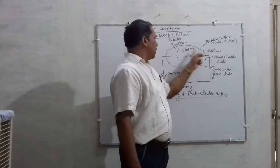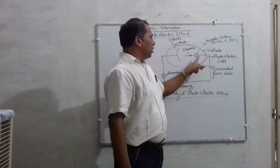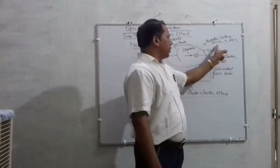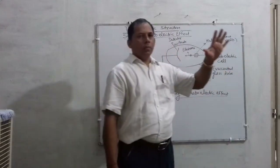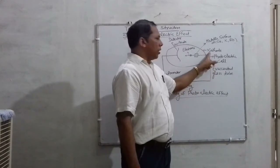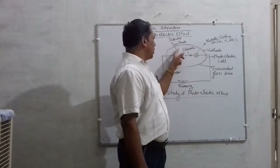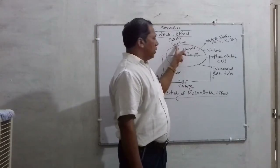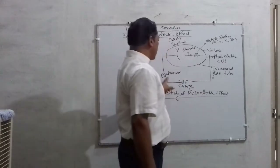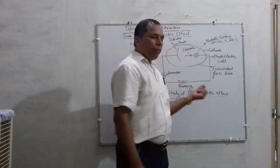One terminal is a cathode and the other is an anode. Generally, metallic surface metals like cesium, potassium, or rubidium are used as a cathode. One detector is used as the anode. These tube terminals are connected with an ammeter and also connected to a battery.